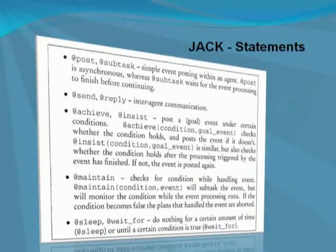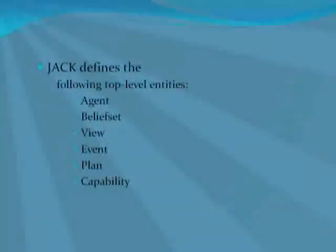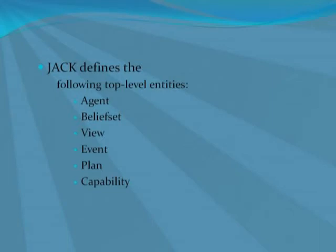Let us look at the top-level entities in JACK. First of all, agent: agents are specified by defining the events they handle and send, the data they have, and the plans and capabilities they use. Belief set: this is effectively a relational database that is stored in memory rather than on disk. View: views are virtual belief sets that are computed from other belief sets.